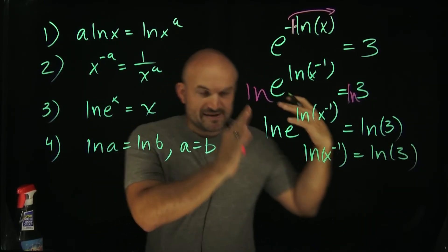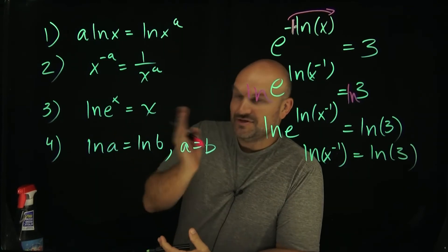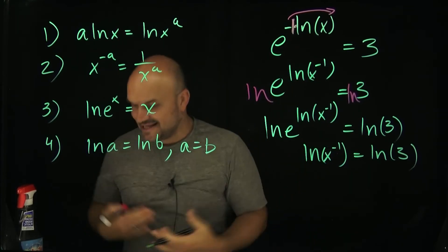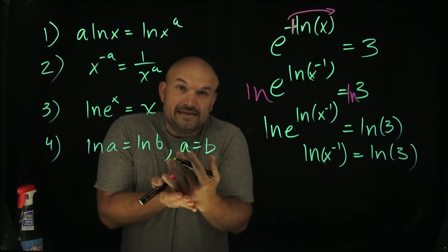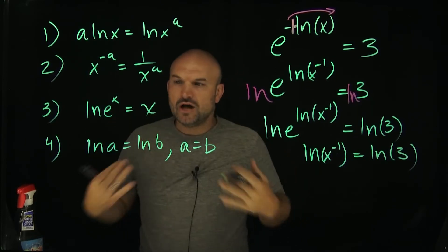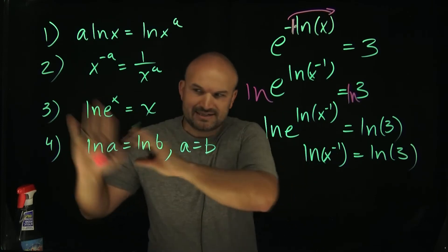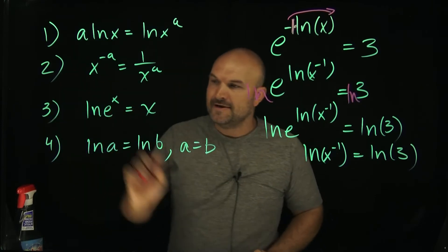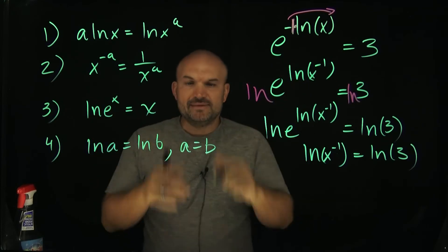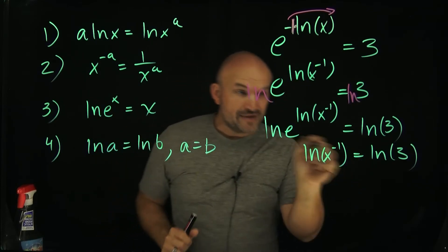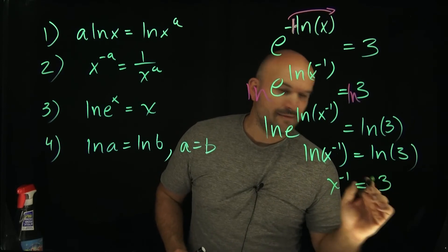Now we have a logarithm equal to another logarithm. It doesn't matter if it's base 10, base 7 — in this case it's base e. When you have two logarithms that are isolated, with nothing else going on — no extra terms — when a logarithm equals another logarithm, their arguments are going to be equal. So I can rewrite this as x to the negative first power equals 3.